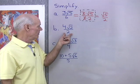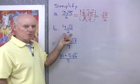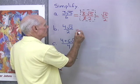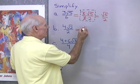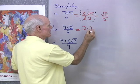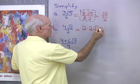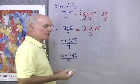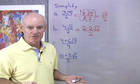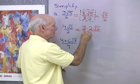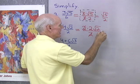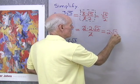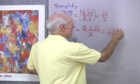This is a similar problem: 4 square root 2 divided by 2. So I'm going to factor the numerator here and write this as 2 times 2 square root 2, all divided by 2. I can see the factor I have common to the numerator and denominator, I divide that out, and I end up with just 2 square root 2 for that answer.